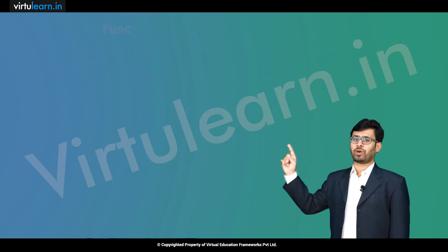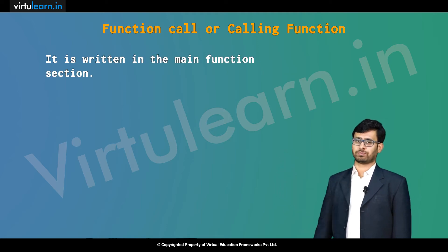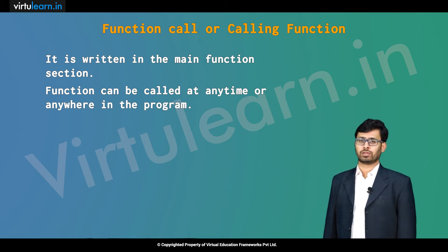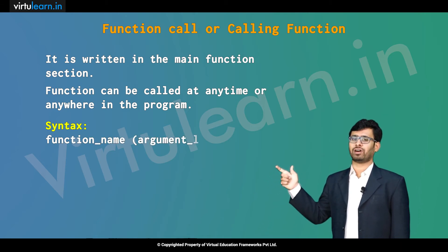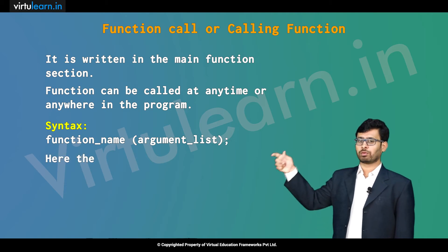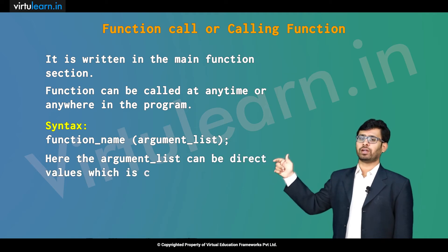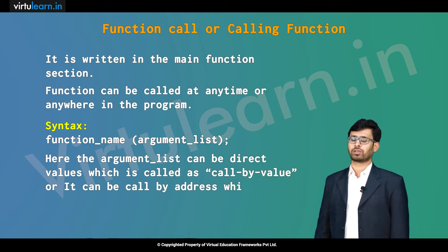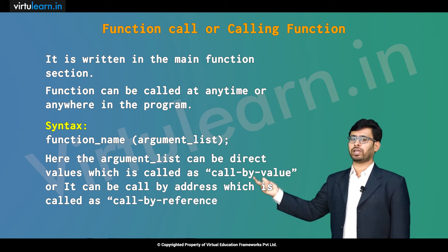The second one is function call or calling function. It is written in the main function section. A function can be called at any time or anywhere in the program. The syntax is function name followed by the argument list. An important condition to remember is that in the argument list, it can be a direct value — which is the concept of call by value — or it can be called by address, which is call by reference.